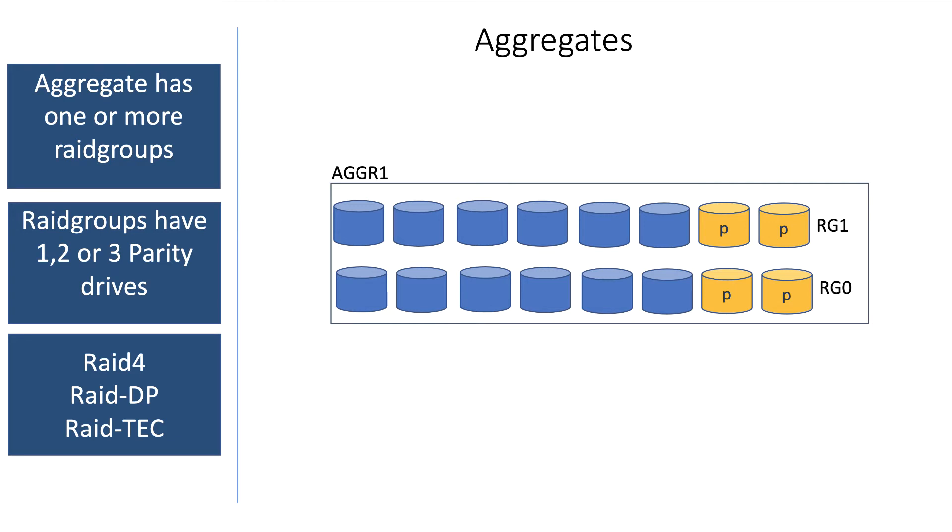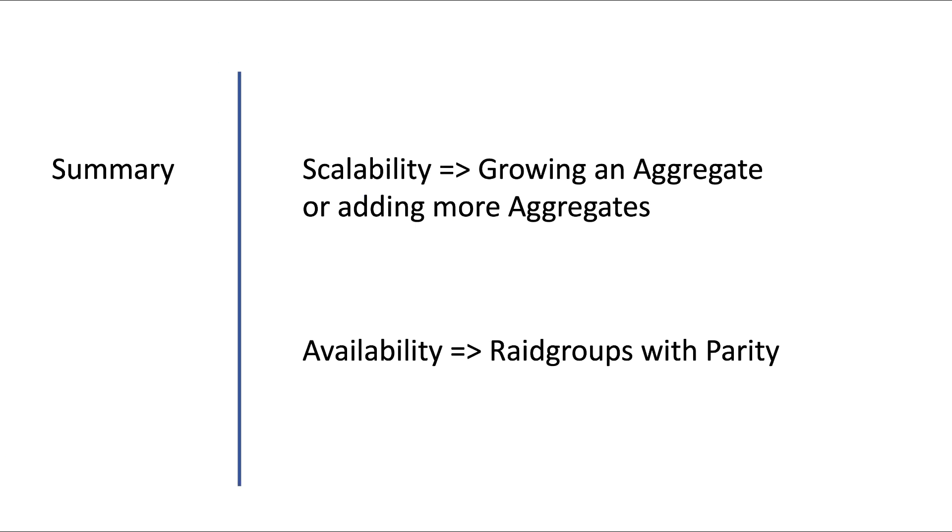So in summary, scalability is offered by the possibility of growing your aggregate, and availability is offered by parity devices in the RAID groups.